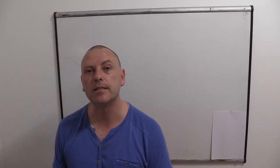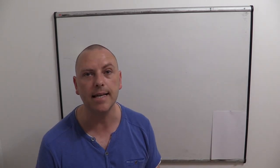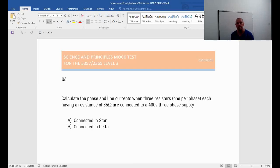Hi guys, once again. This time question 6, science and principles. Let's have a look at what it says. It says calculate the phase and line currents when three resistors, one per phase, each having a resistance of 35 ohms, are connected to a 400 volt three phase supply. And we need to calculate that for star and delta.